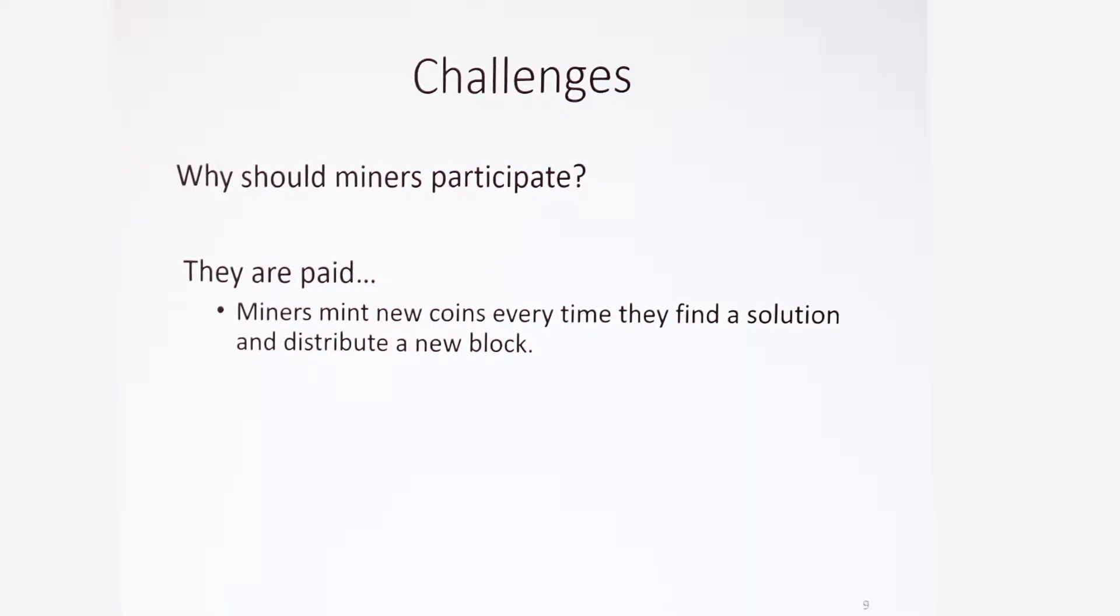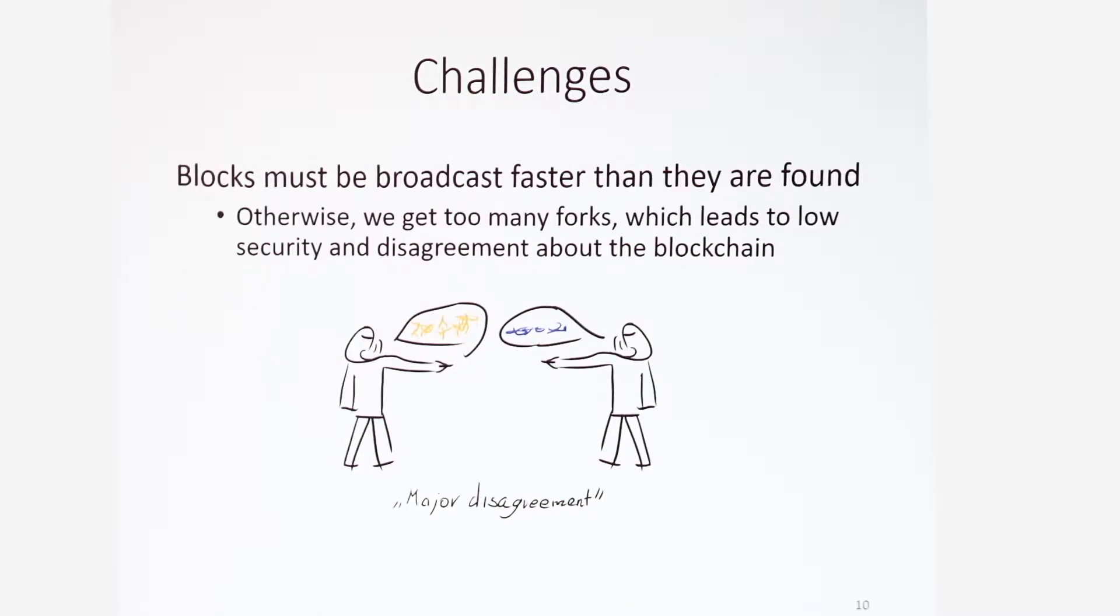Coins have several challenges they need to address. First of all, incentivize the miners. Miners should get paid enough to make their efforts worthwhile. So let's assume that we pay the miners enough and more miners join and they mine very fast and they find a lot of solutions and they generate blocks in a very high rate. This raises the next problem: forks. When blocks are generated too fast and the broadcasting time is too slow, then the chain splits into competing sub-chains. This severely damages the consistency of the coin and should definitely be avoided.